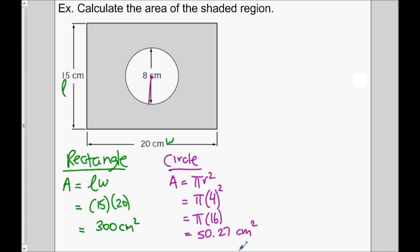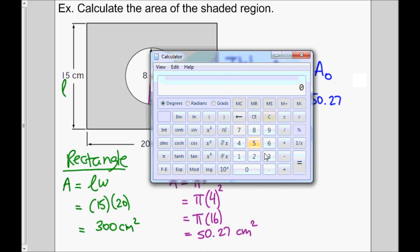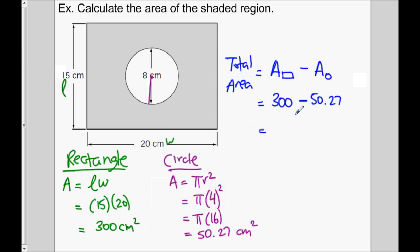Now we're going to take the circle out of the area of the rectangle. The total area of the shaded part is the area of the rectangle subtract the area of the circle, because the circle is cut out of the rectangle. So 300 minus 50.27 gives us 249.73 square centimeters.